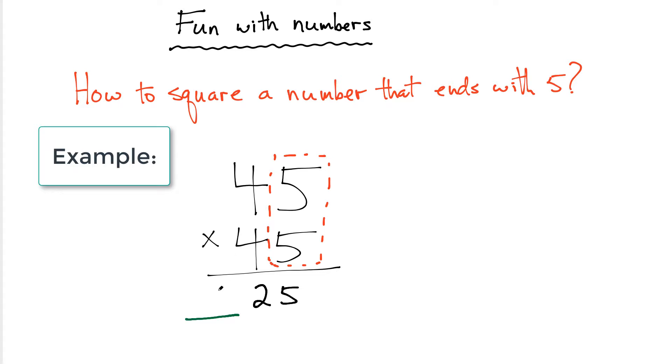So to get the number that goes in front of the 25, all you have to do is instead of using the first two numbers, instead of multiplying 4 times 4, what you do is you simply add 1 to the top number and then multiply those two.